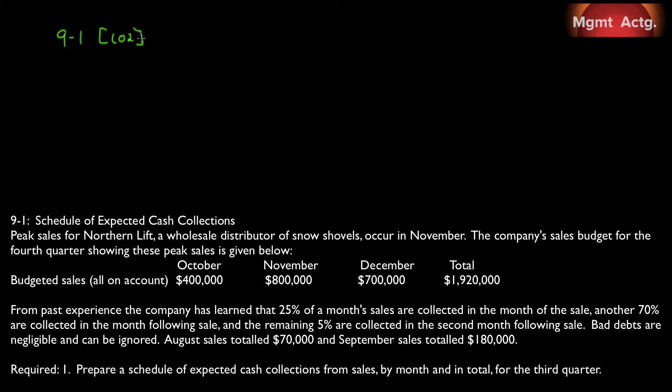From past experience, the company has learned that 25% of a month's sales are collected in the month of sale, another 70% are collected in the month following sale, and the remaining 5% are collected in the second month following sale. Bad debts are negligible and can be ignored. August sales totaled $70,000.